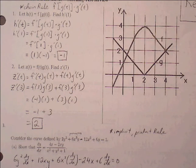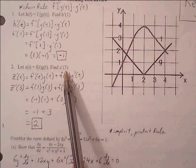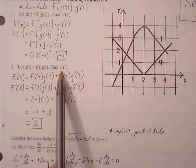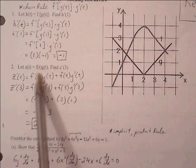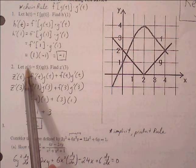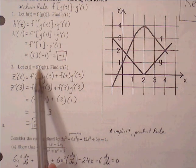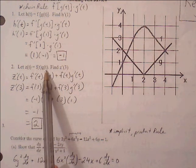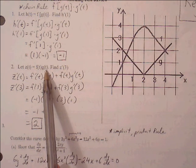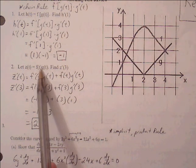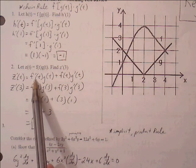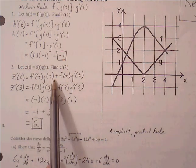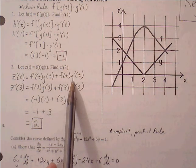Number two: let z of t equal f of t times g of t, find z prime of three. So if you want to find z prime of three, we have to find the derivative of z first. Notice that these are two functions being multiplied together, so we have to go through product rule. Product rule says f prime g plus f g prime — the derivative of the first function times the second, plus the first function times the derivative of the second.